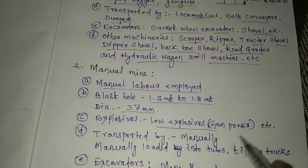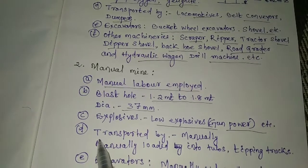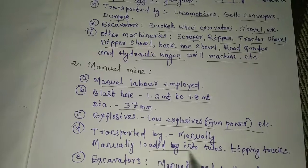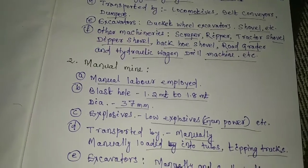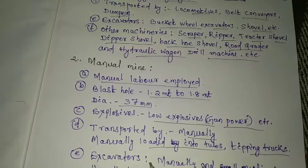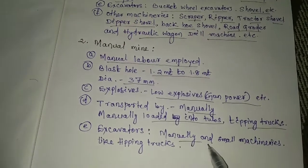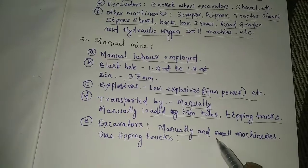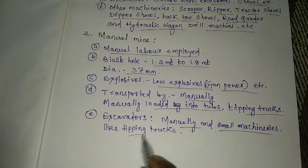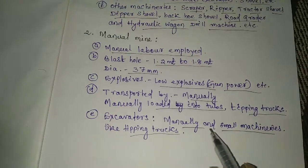Explosives generally used are glow explosives, gunpowder, etc. Material is transported manually, loaded manually into tops, tippers, and tipping trucks. Excavators are generally loaded manually. Small machineries are generally used, along with tipping trucks, etc., in this mine.